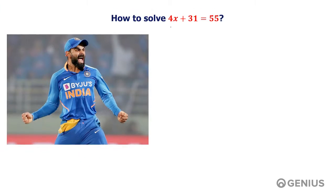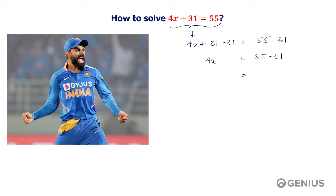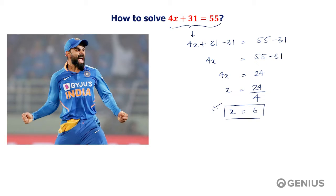How do we solve this equation? It's very easy. So, 4x + 31 = 55. If we separate 31 from both sides, then 4x = 55 minus 31, which is equal to 24. And then if we divide both sides by 4, we get x = 24 upon 4, which is 6.